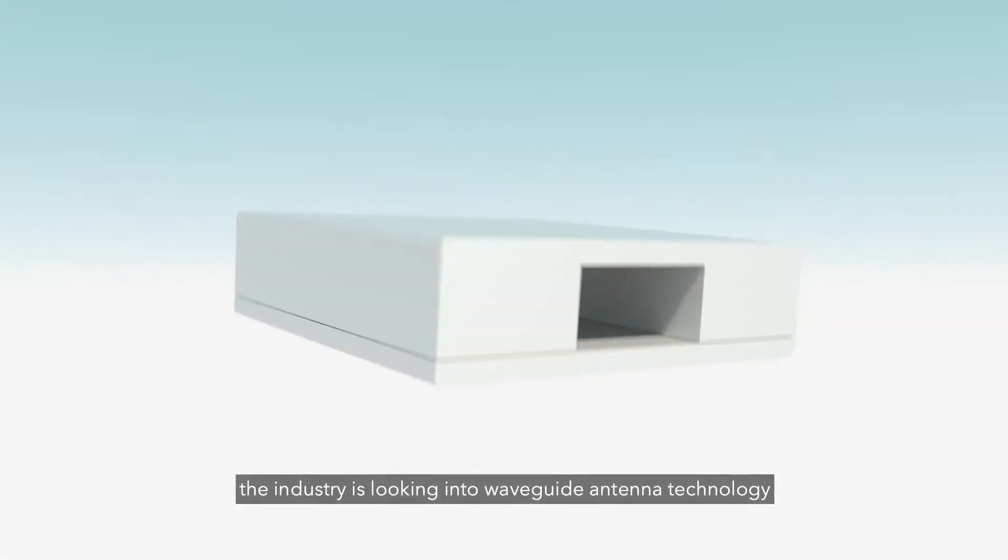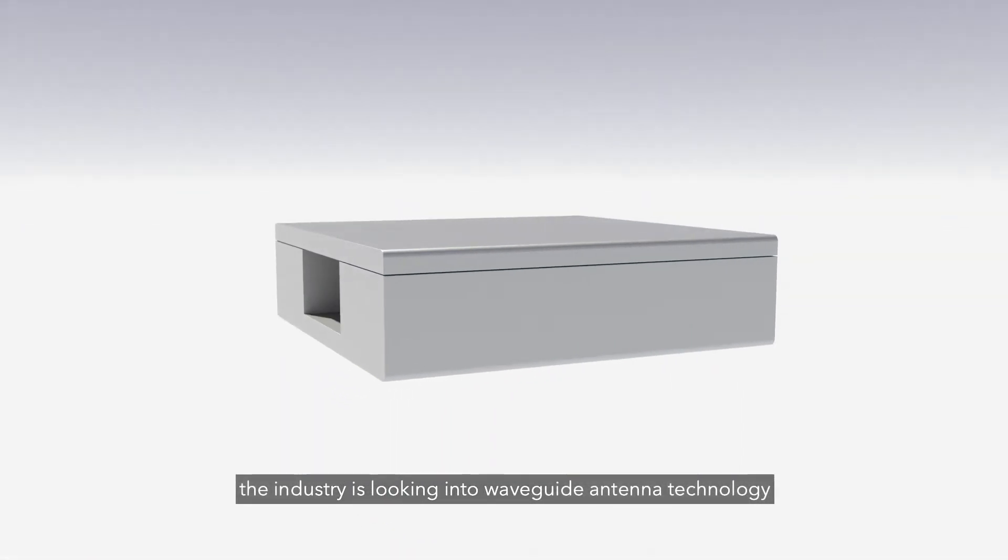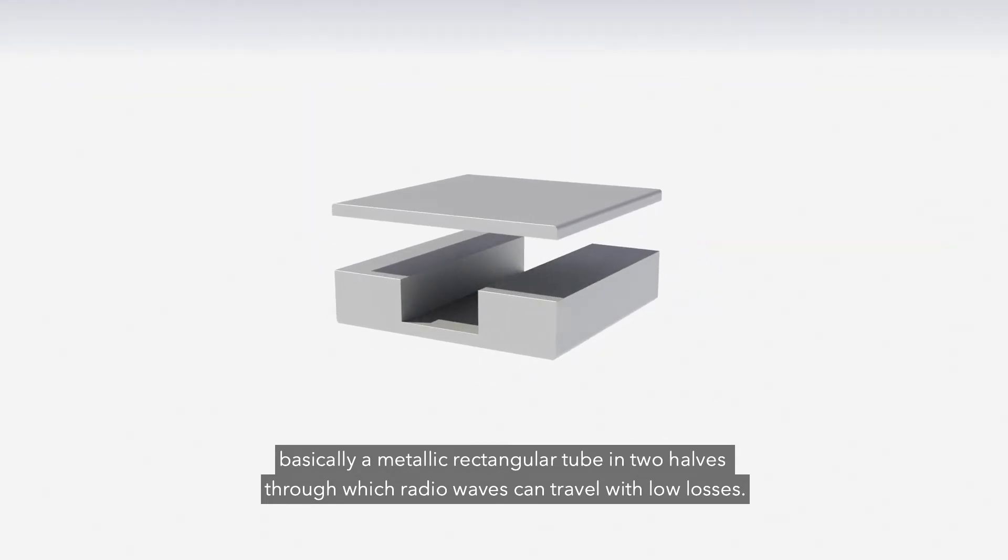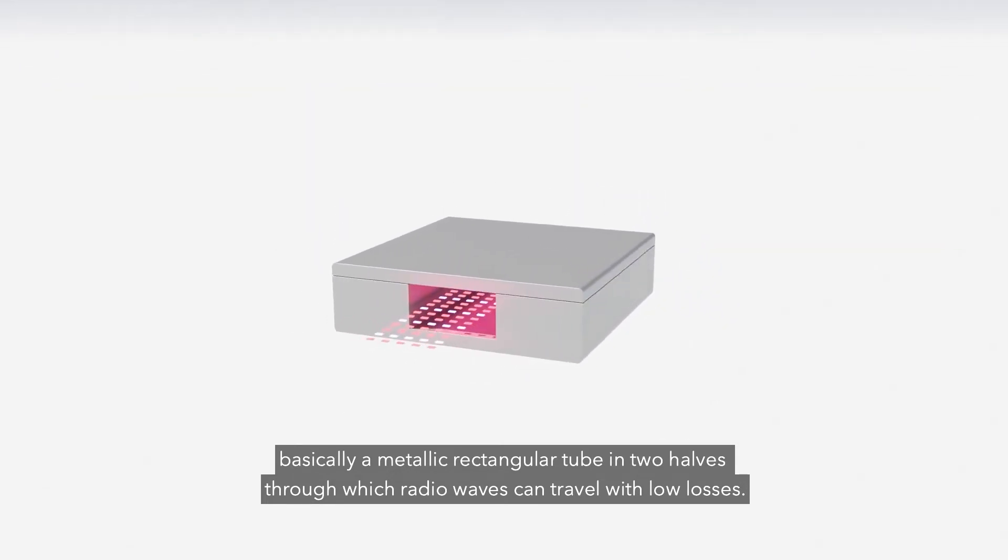The industry is looking into waveguide antenna technology, basically a metallic rectangular tube in two halves through which radio waves can travel with low losses.